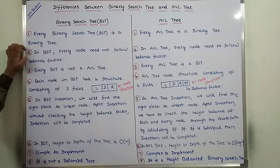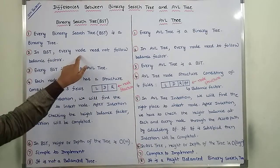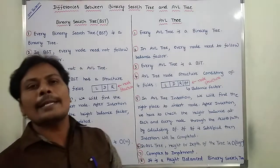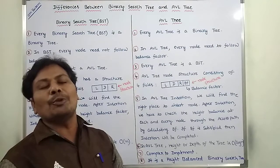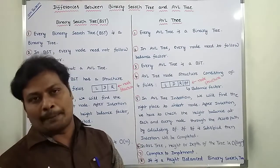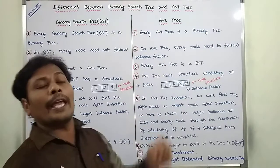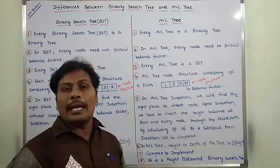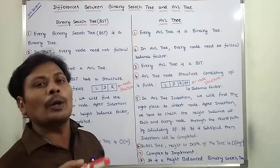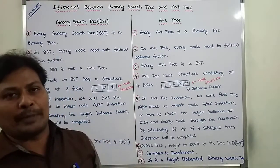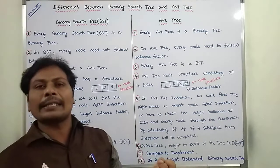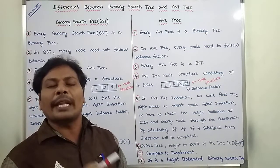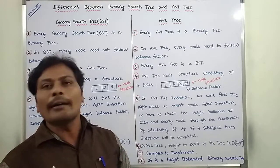Second difference: in BST, every node need not follow a balance factor. In the case of binary search tree, we do not follow any balance factor concept. But in the case of AVL tree, for each and every node, we have to follow the balance factor concept. Balance factor can be defined as the height of the left subtree minus the height of the right subtree.